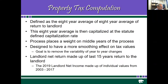It's important to realize that the landlord net income is determined by statute in Kansas law. This is defined as the eight-year average of the eight-year average of the return to the landlord. For non-irrigated land, on a county-by-county basis, there is the revenue from each crop calculated by price times yield minus the expenses. Government payments, crop insurance proceeds, and trading profit from futures contracts are all excluded from the calculation.